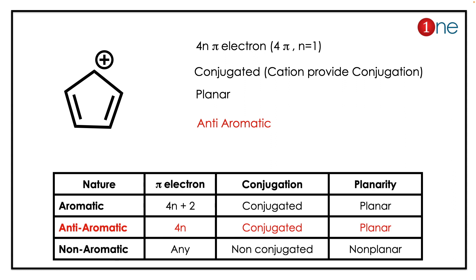Here you have a tricky situation. You have to count the cation for the conjugation. The cation doesn't contribute electrons but it will participate in the conjugation and provide conjugation. So it has 4n π electrons where n is one, because four π electrons are there. It's conjugated and planar, so 4n conjugated and planar means anti-aromatic system.